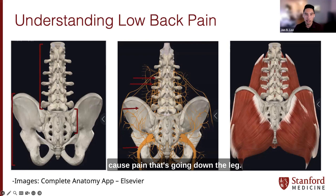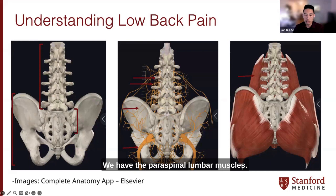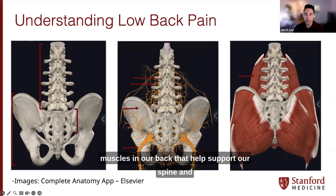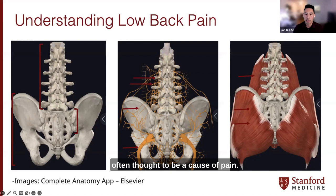With the sciatic nerve, oftentimes this can cause pain going down the leg. In our last picture to the right, we have a diagram of the muscles supporting our spine. We have the paraspinal lumbar muscles — a broad grouping of all the muscles in our back that help support our spine and give us stability as we walk. Next we have the gluteal muscles, and underneath the gluteal muscles are several other muscles, including the piriformis, which is often thought to be a cause of pain.